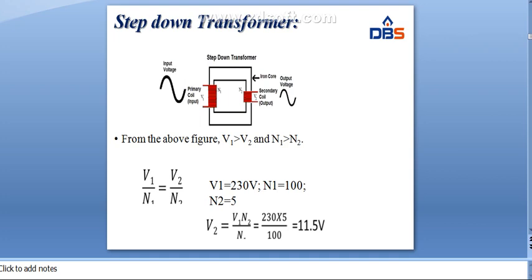The primary voltage is V1 and the secondary voltage is V2. The primary turns N1 are greater than the secondary turns N2. We can write: V1/N1 = V2/N2.